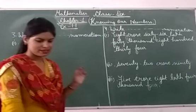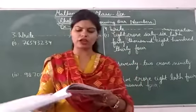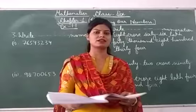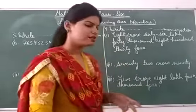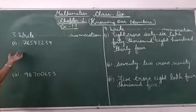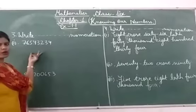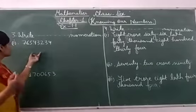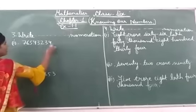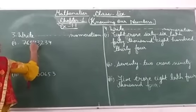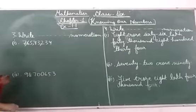Now question number 3 is: write the number name for each of the following using the Indian system of numeration. Students, we have these numerals and first of all we have to put commas according to Indian system. So we have to move right to left and after 3 digits, then after 2 digits, then after 2 digits.